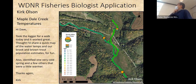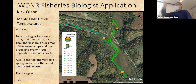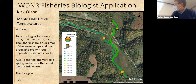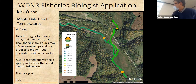It records air temperature, water temperature, location, and time — everything temporally and spatially located. Kirk Olson, a Wisconsin DNR fisheries biologist, saw me give a talk and said he'd like to borrow it to understand how trout streams are operating. He took the logger for a walk along Mapledale Creek, shared a map of the data — it spits out lat/long and temperatures — and identified one very cold spring and a few others that were a little warmer.